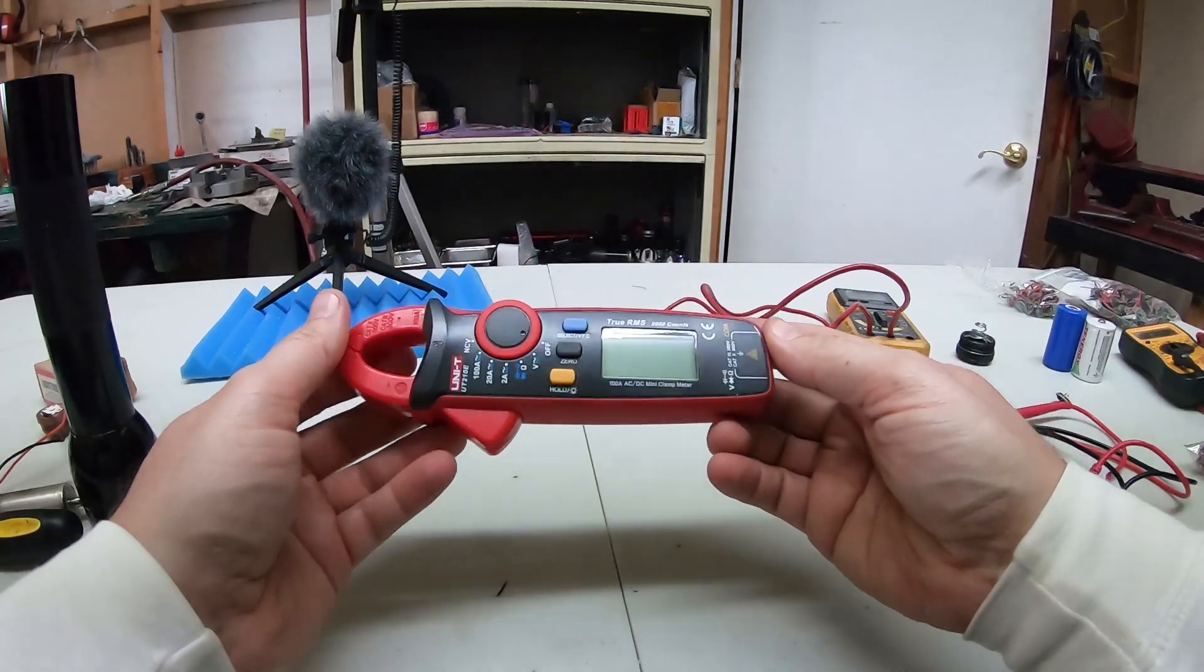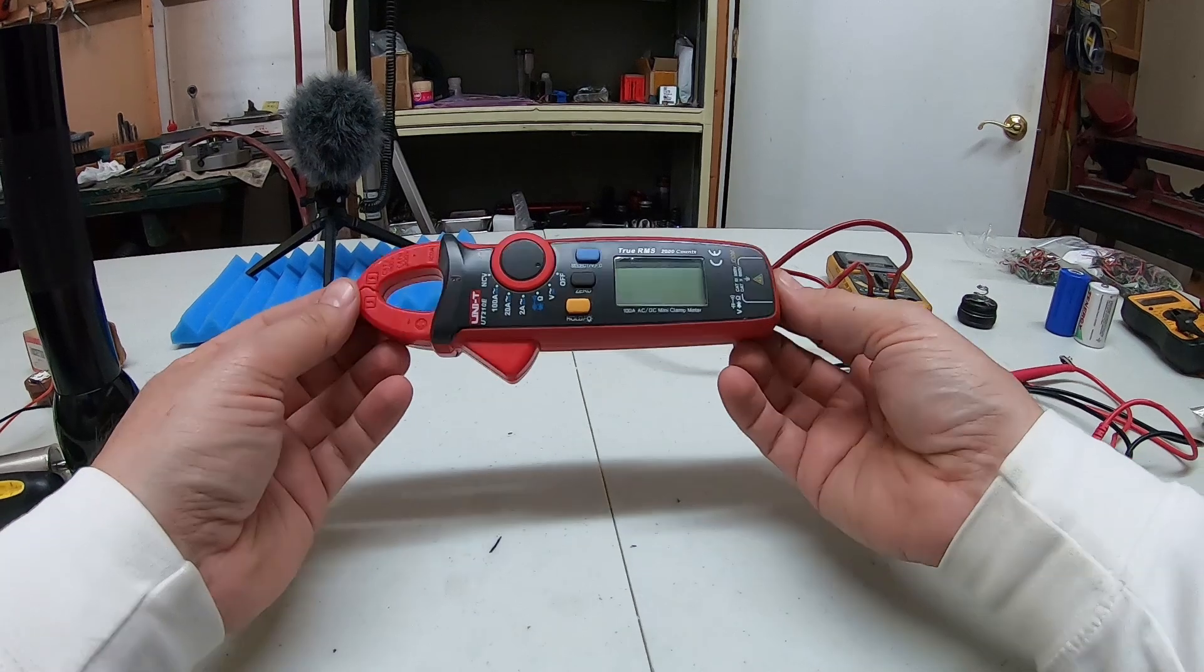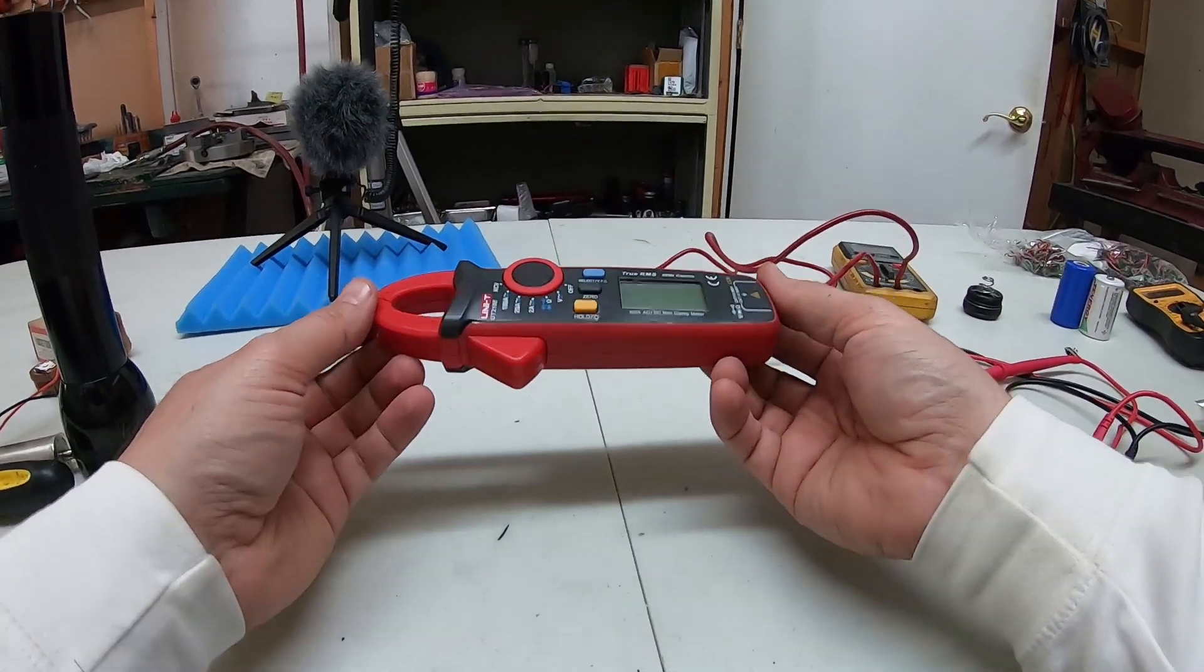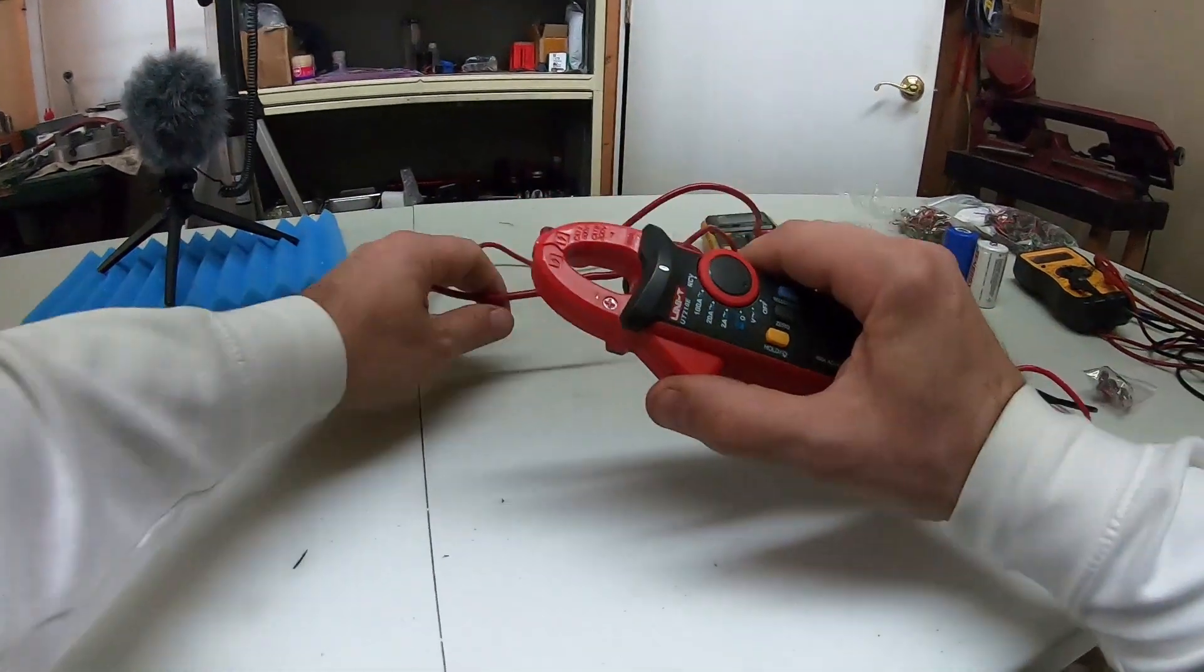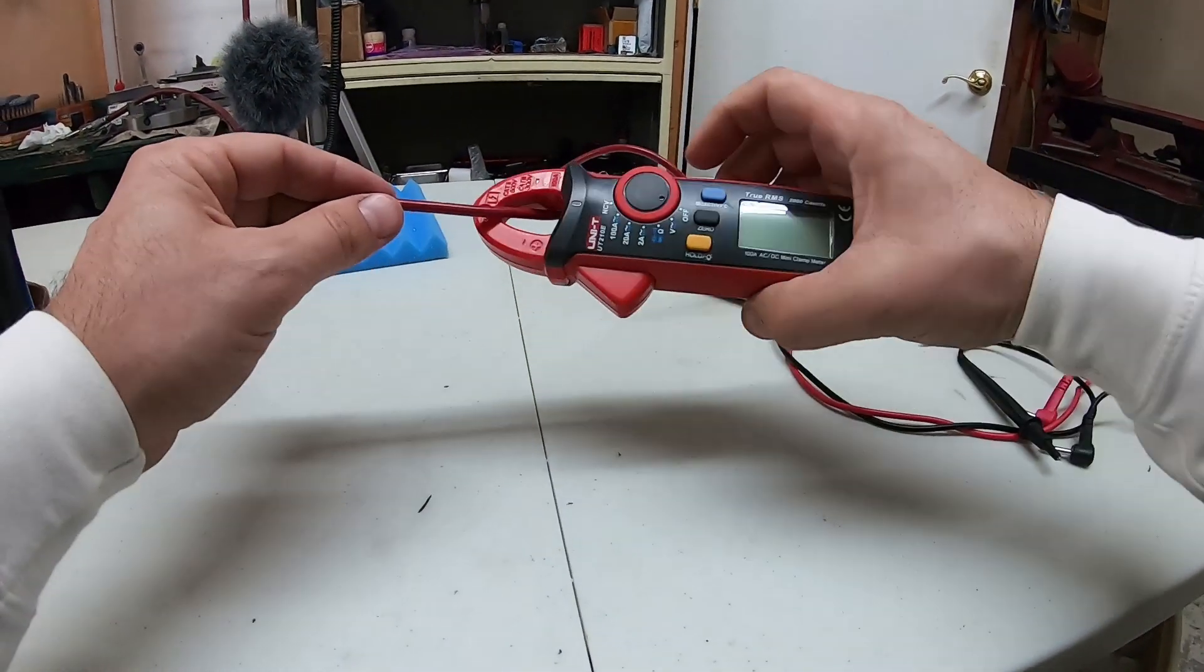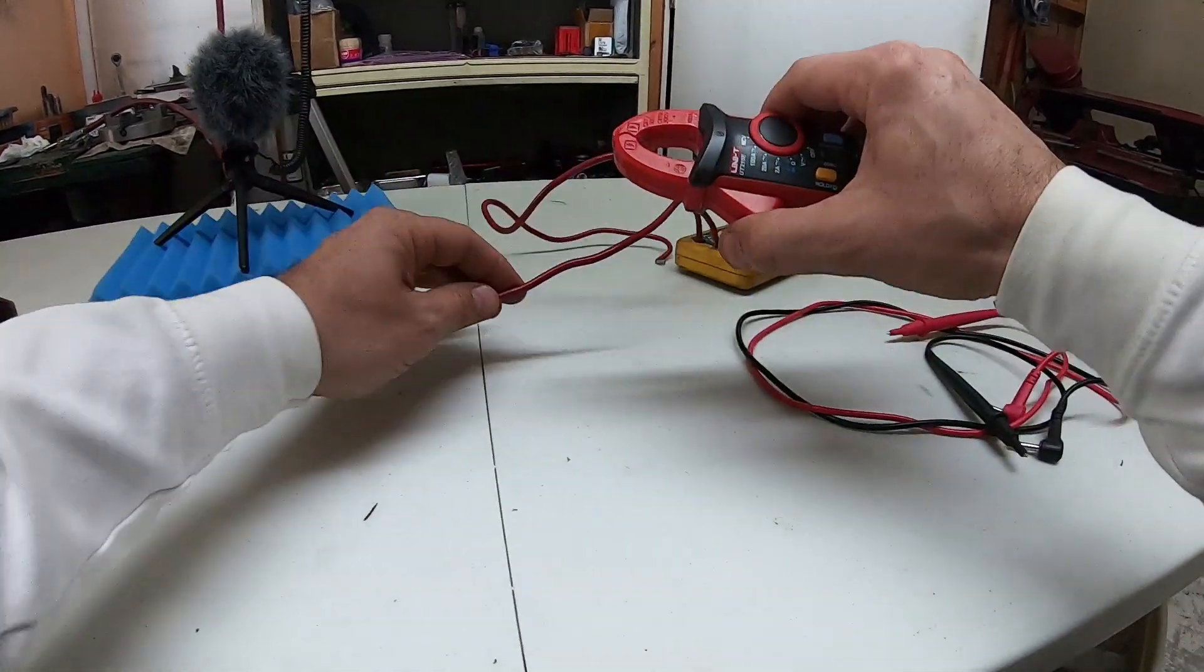Alternatively, what we can do is use a clamp meter and I like this much, much better. These are very, very good to have. Instead of using the leads you just clip this around a wire and it'll give you a reading, pretty accurate, much easier to use.